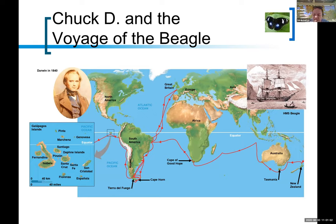Ultimately he wrote a book you may have heard of called the Origin of Species — that's not the full title actually. One of the things that's really charming about that is that many people call him the father of evolution, but he only used the word "evolution" once in his book, and it was in the very last sentence. He didn't call what he was observing evolution — what he called it was "descent with modification."